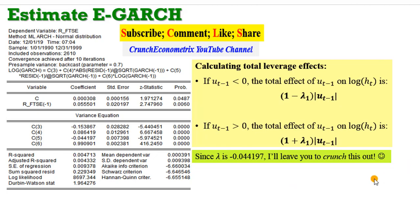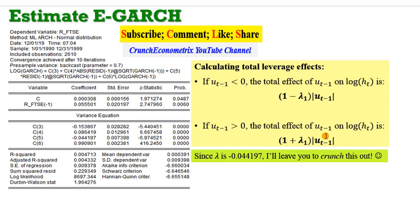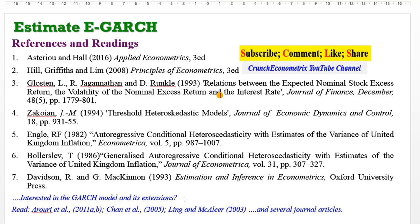Now let me show you how to derive the total leverage effects. If u_{t-1} is negative, the total effect of u_{t-1} on the dependent variable is computed as shown. If u_{t-1} is positive, the total effect is computed differently. We have been given the value of lambda — I will leave you to work out this computation. These are the references to help solidify your understanding of GARCH models and their variants.